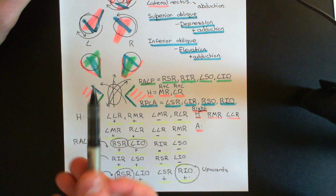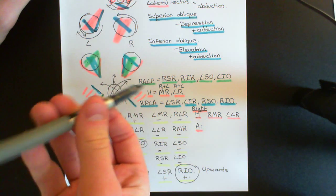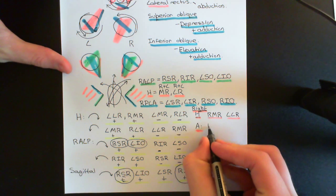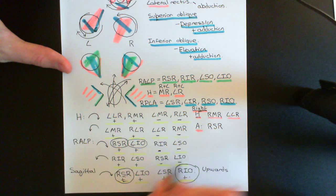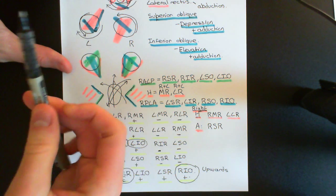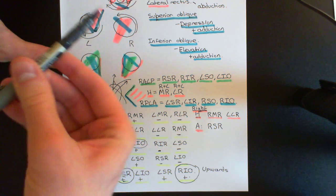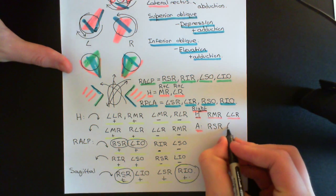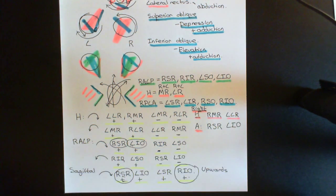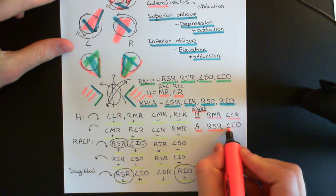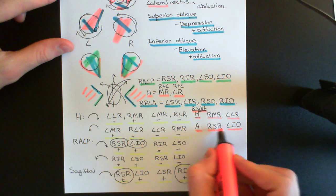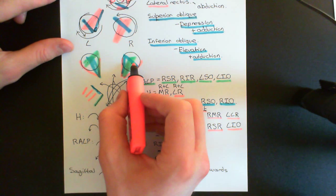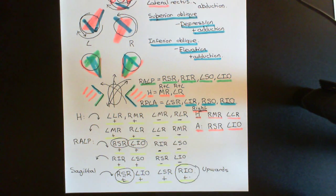If we're moving our head downward, we want our eyes to move upward. So we activate the ipsilateral superior rectus — the right superior rectus — which pulls the right eye upward. On the left side, we activate the inferior oblique, not the superior oblique, because the inferior oblique pulls the eye upward. So the right anterior canal connects to the contralateral inferior oblique. The left anterior canal mirrors this, connecting to the left superior rectus and the right inferior oblique.